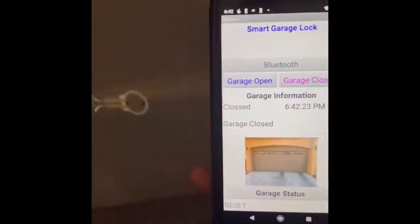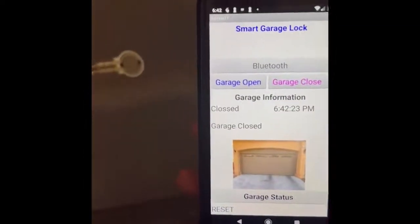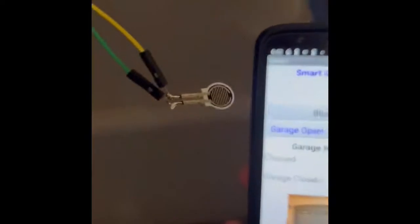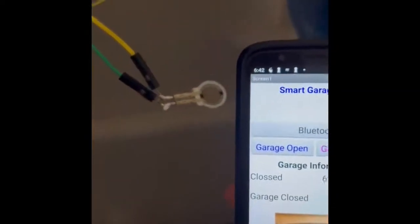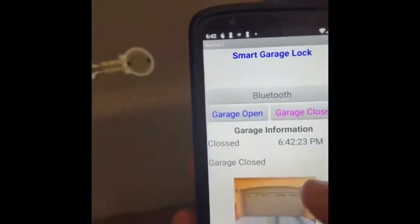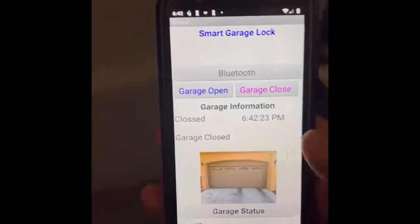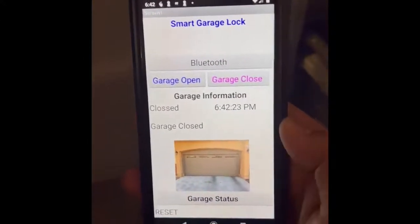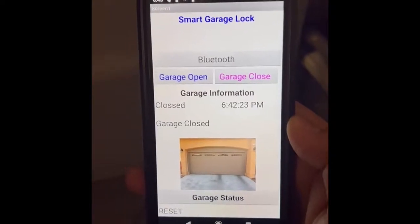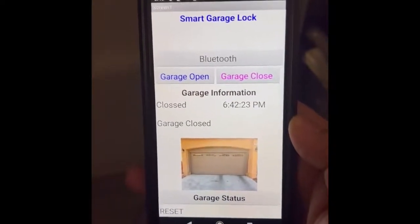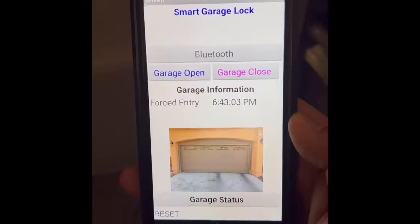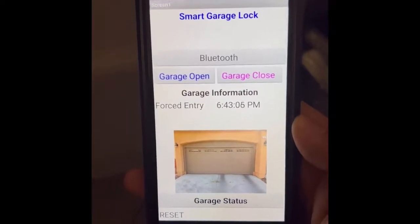So next we're going to show a forced entry. That is when somebody tries to open the garage door, this will sense force and it will send a notification to the app. There it is. Forced entry with the timestamp.